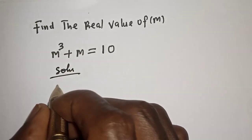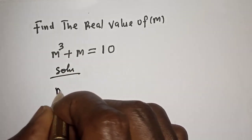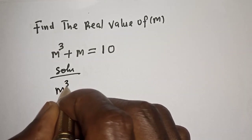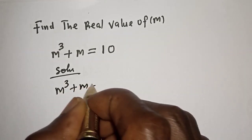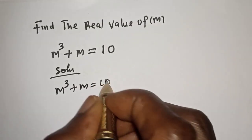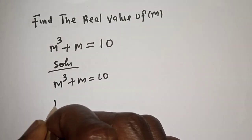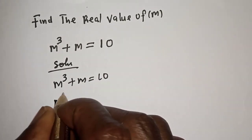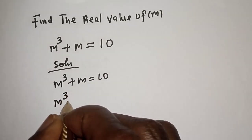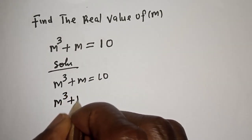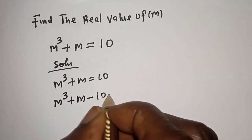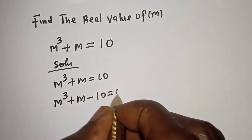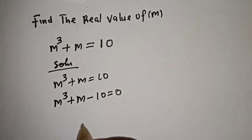The given equation is m cubed plus m is equal to 10. Rearranging, m cubed plus m minus 10 is equal to 0.